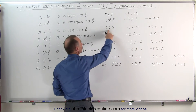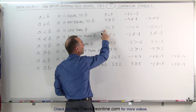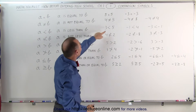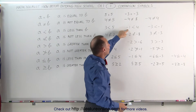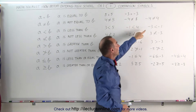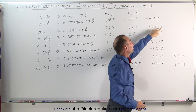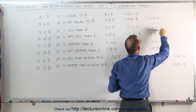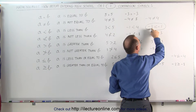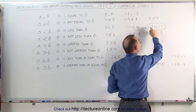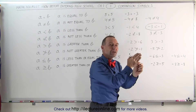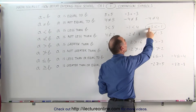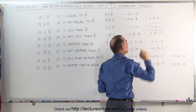A less than symbol means the number on the left side has a lesser value than the number on the right side. For example, 3 is less than 5, negative 1 is less than 4, and negative 3 is less than negative 1. That last one is sometimes hard to understand because 3 appears bigger than 1, but with a negative sign, negative 3 is further to the left on the number line than negative 1, and therefore negative 3 is smaller.